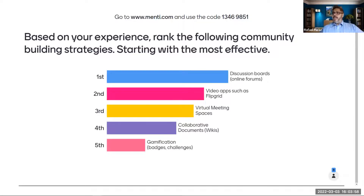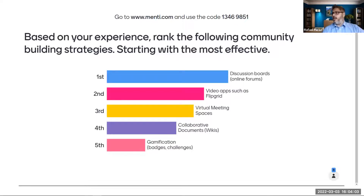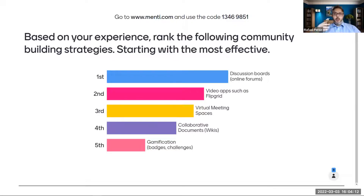Based on your experience, rank the following community building strategies starting with the most effective: discussion board, video apps such as Flipgrid, virtual meeting spaces, collaborative documents — such as a Wiki, OneDrive, or Google Drive — or gamification.